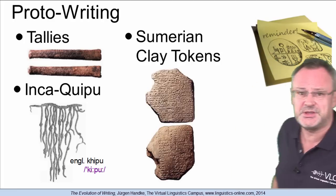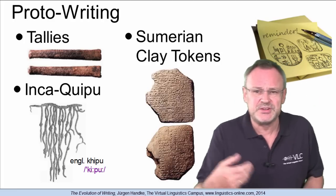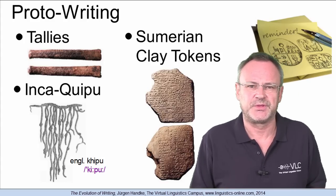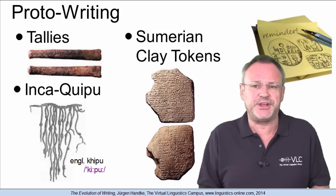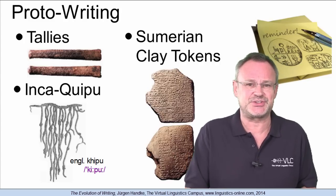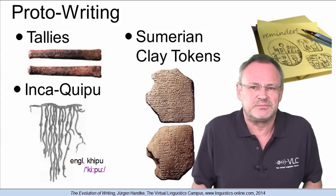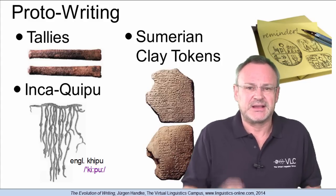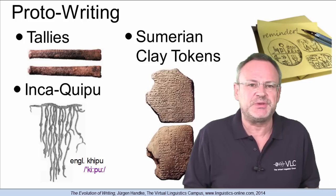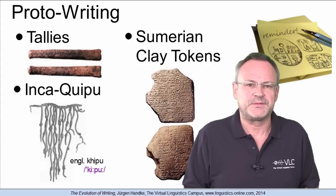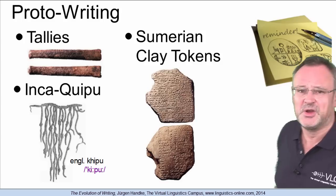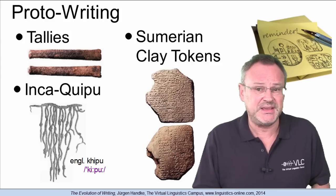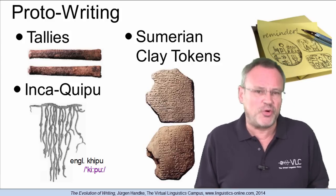And then there are the Sumerian clay tokens — small, differently shaped clay objects that have been found all over the Middle East. It has been suggested that specific shapes were connected to specific entities such as numbers or everyday objects or both; one specific token for 10 sheep, for example. Clay tokens thus could have been used for record keeping and accounting. Systems of this kind were in use long before and often also alongside writing, and mainly served as reminders and controlling devices.